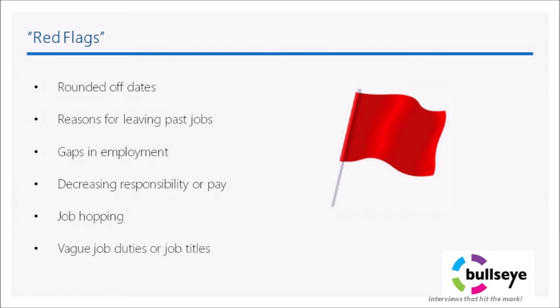Here are some examples of red flags. Rounded-off dates — for example, 2015 rather than May 2015. Another red flag is reasons for leaving past jobs. If they mention personal reasons, you should ask about that, particularly if it was vague or very negative. We'll talk later about what to do if a question comes up regarding a protected activity.